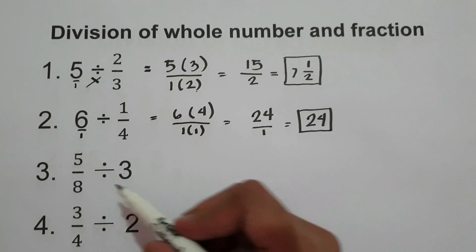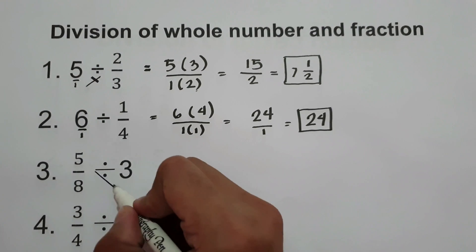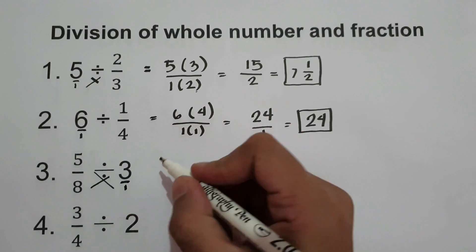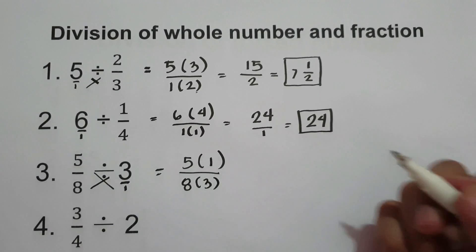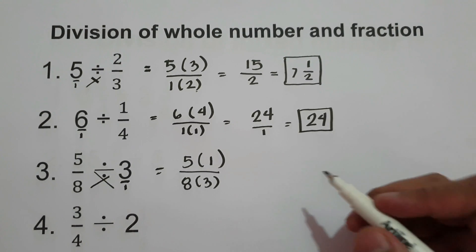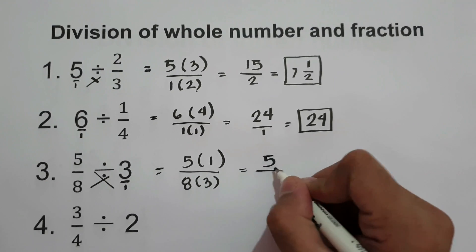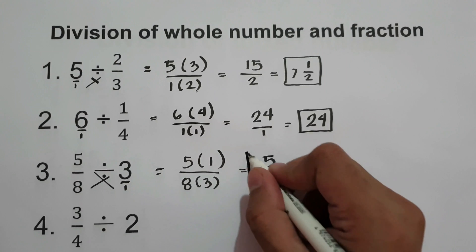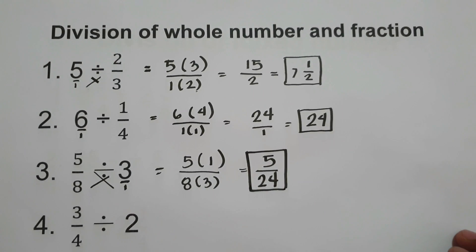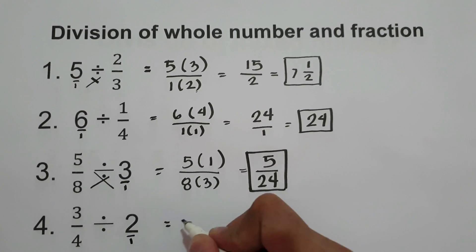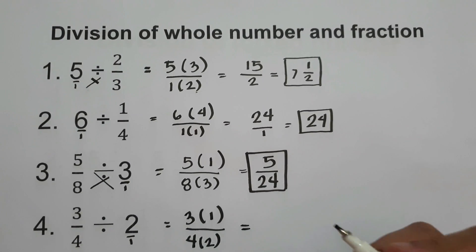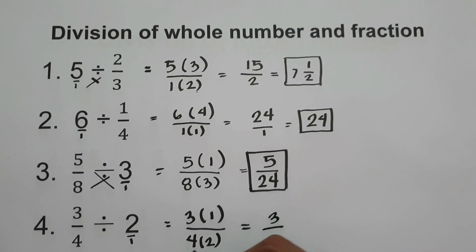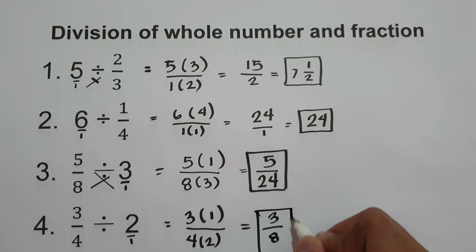What about number 3? We have 5/8 divided by 3. Cross multiplying, with the denominator of 3 being 1, gives us 5 times 1 over 8 times 3. That is 5 over 24, which is our final answer. What about number 4? We have 3/4 divided by 2. That gives us 3 times 1 over 4 times 2, which is 3 over 8.